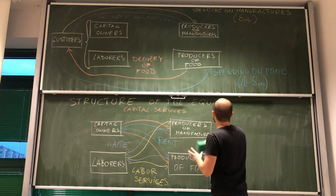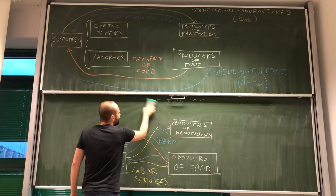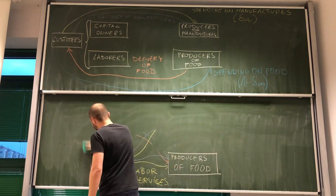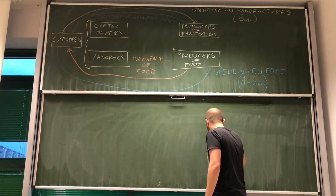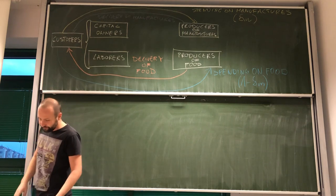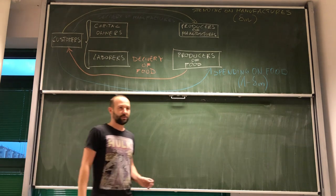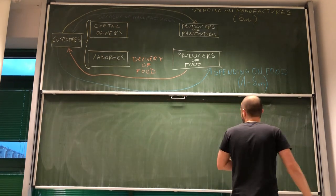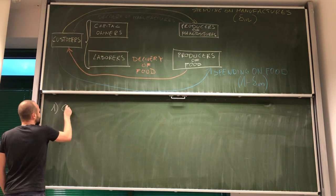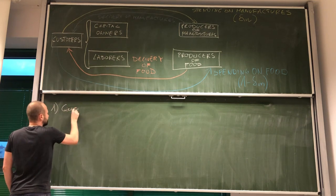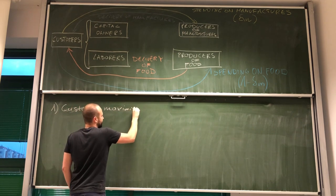Okay, so now we can actually summarize what is required for this economy to be in equilibrium. And, actually, for this economy to be in equilibrium, we need to have six different conditions fulfilled at the same time.